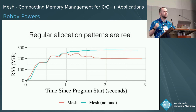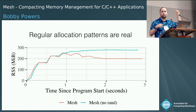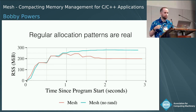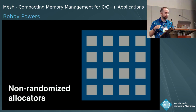If we run this program under Mesh with randomization disabled, we're not able to recover any memory through compaction. But we are able to recover memory if we enable randomization.